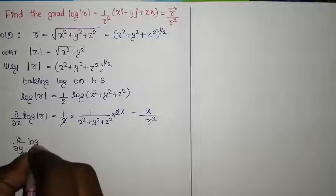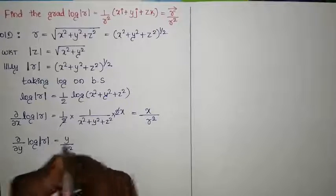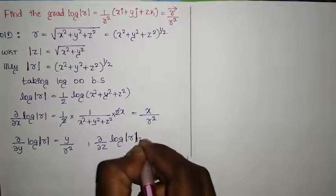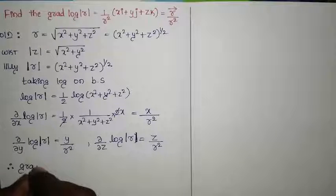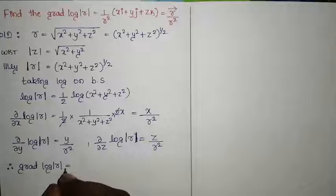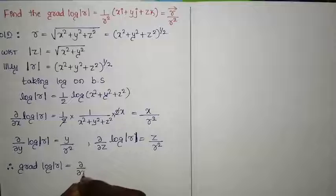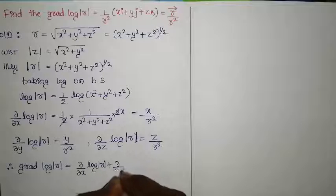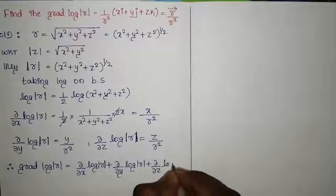So ∂/∂x of log|r| gives x/r². Similarly, ∂/∂y of log|r| gives y/r² by differentiating with respect to y. And ∂/∂z of log|r| gives z/r².